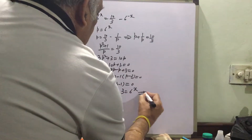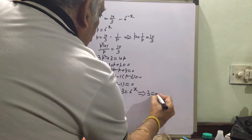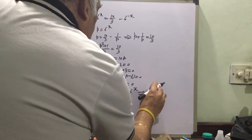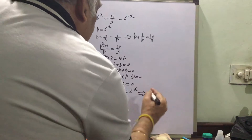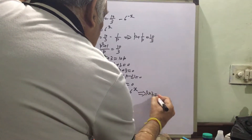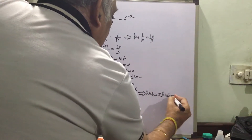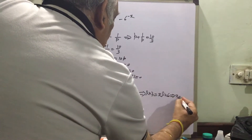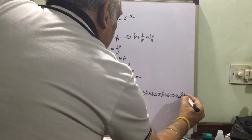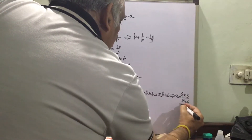From this we can get: taking log of this equation, we write log 3 equal to x log 6. So x is equal to log 3 divided by log 6.